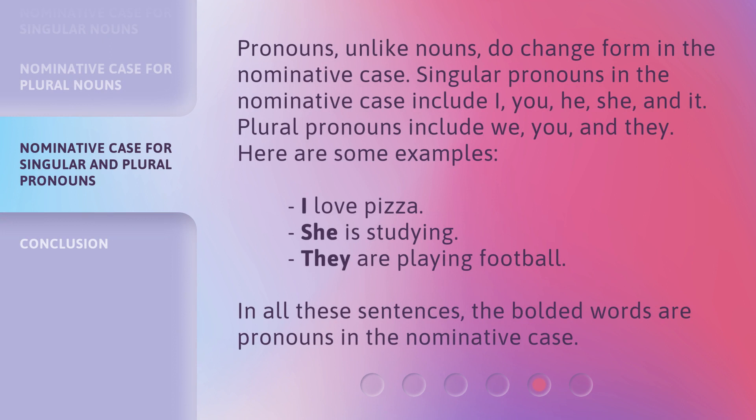Pronouns, unlike nouns, do change form in the Nominative Case. Singular pronouns in the Nominative Case include: I, you, he, she, and it. Plural pronouns include: we, you, and they. Here are some examples: 'I love pizza.' 'She is studying.' 'They are playing football.' In all these sentences, the bolded words are pronouns in the Nominative Case.